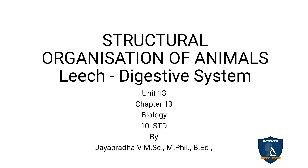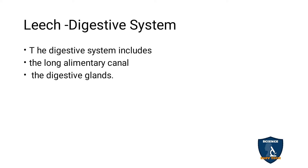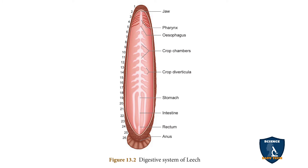Today we are going to discuss the leech digestive system in structural organization of animals, unit 13, chapter 13 in biology. We have already discussed leech external morphology, and today we cover the digestive system, which includes the long alimentary canal and the digestive glands. This is the diagram of the digestive system.